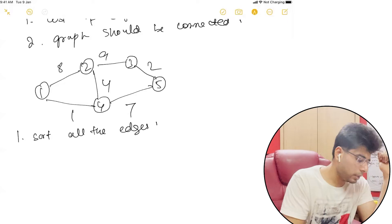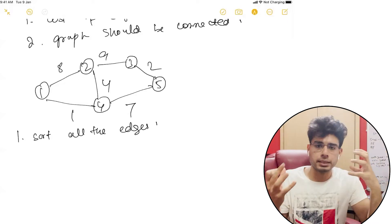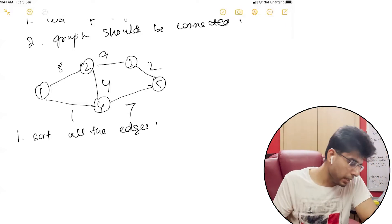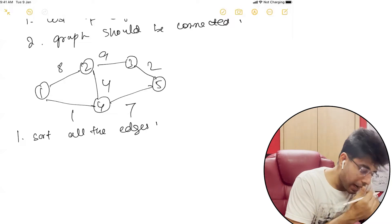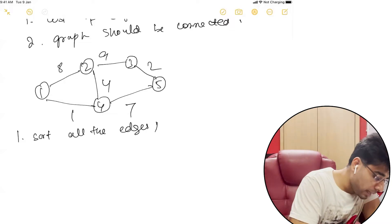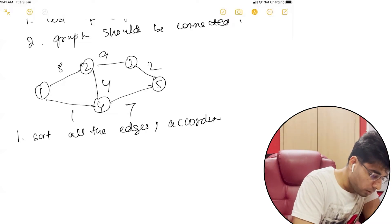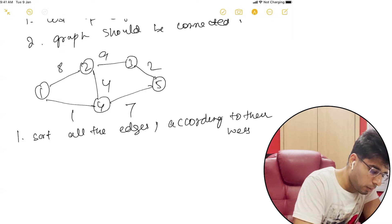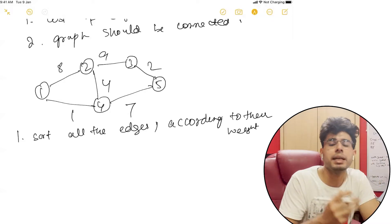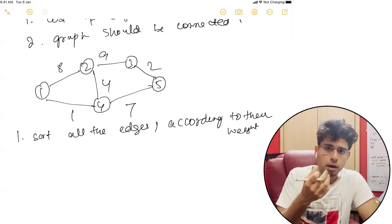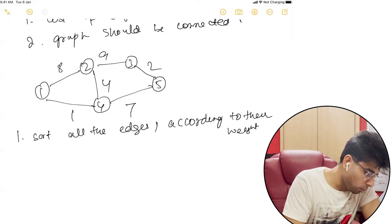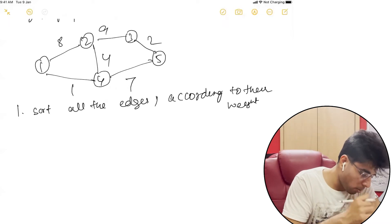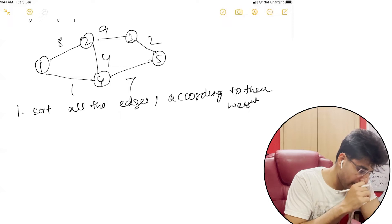Once the edges are sorted — because edges will be given as input — we sort all the edges according to their weight. This is done because we want to ensure that we take the minimum weighted path first.